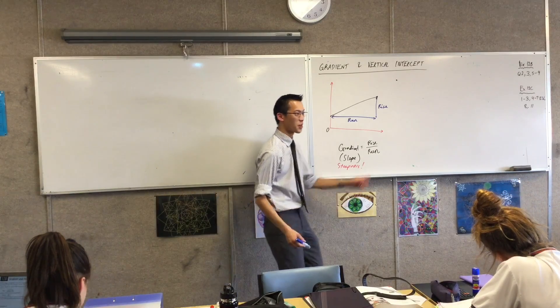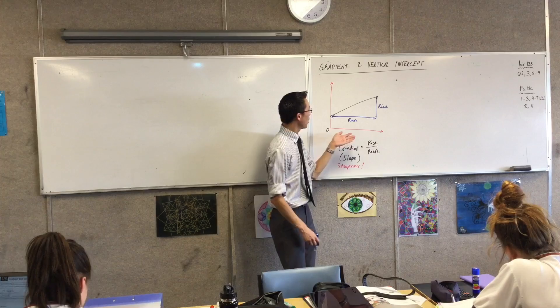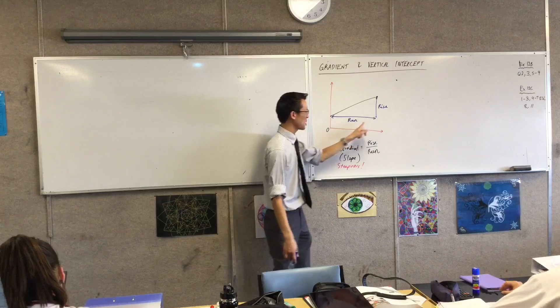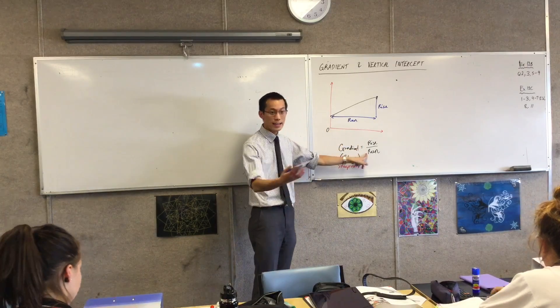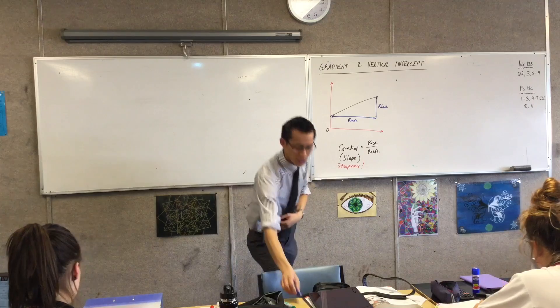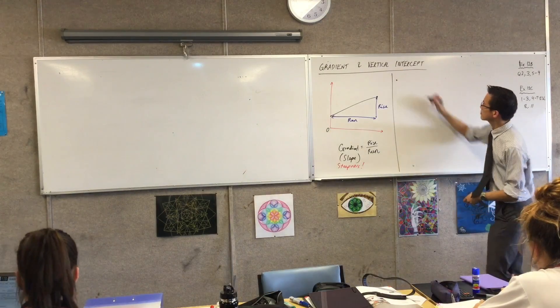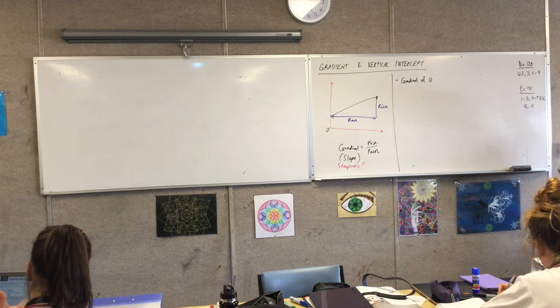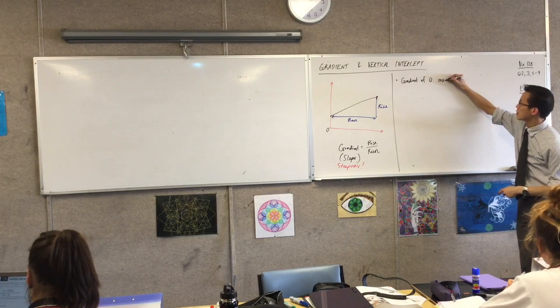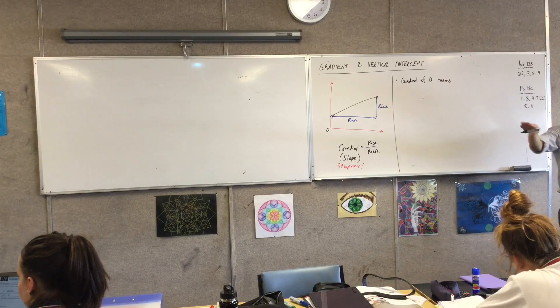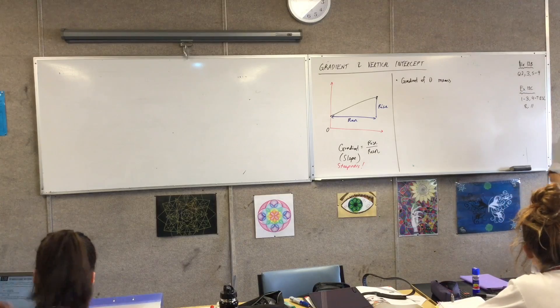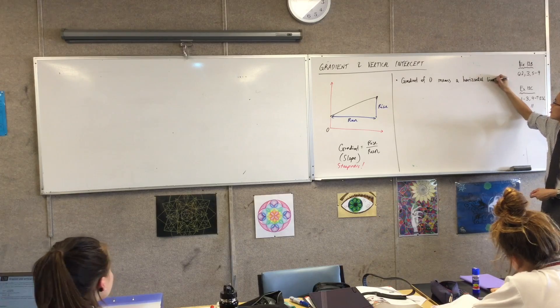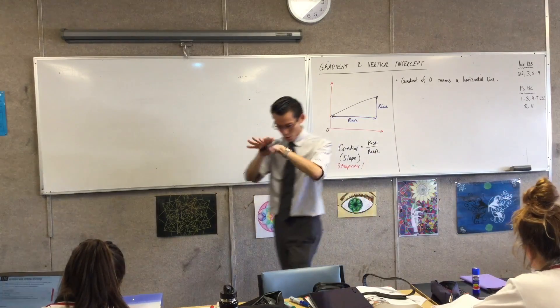So rise over run, it's a fraction. You can see, if you don't rise anywhere, if you've just got a flat line, rise will be zero. So then it doesn't matter what run is. Zero over anything will still be zero. A gradient of zero, which means there's no rise. A gradient of zero means it's a line which is just flat. The technical word would be it's horizontal.